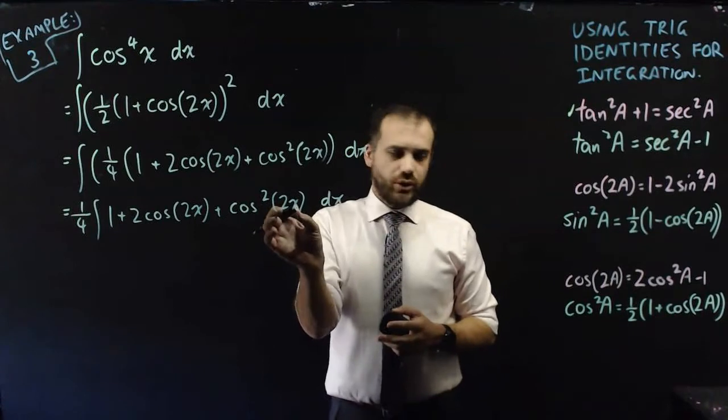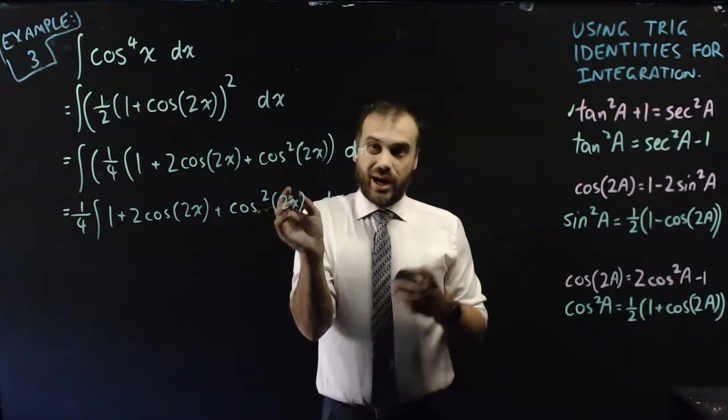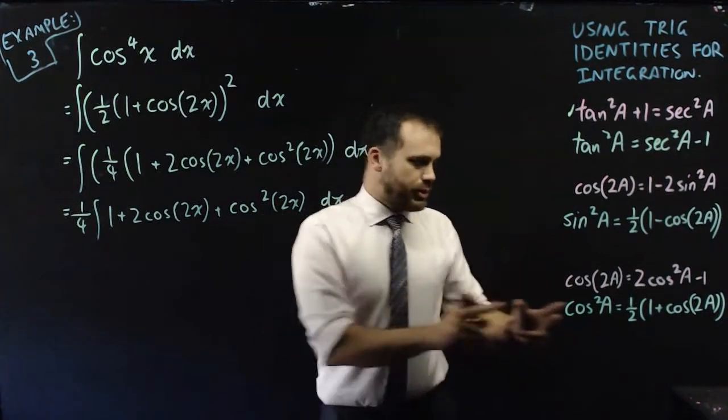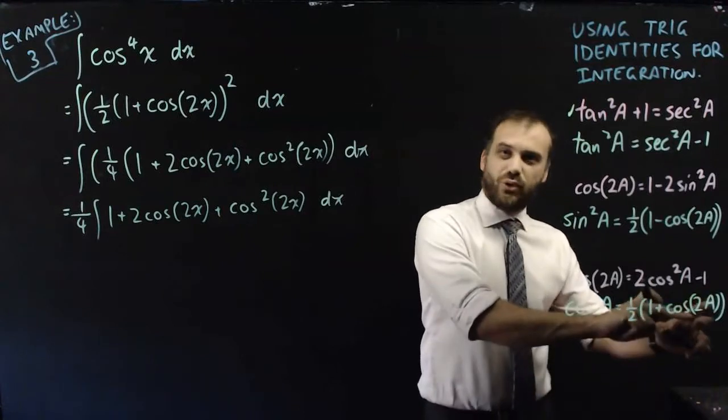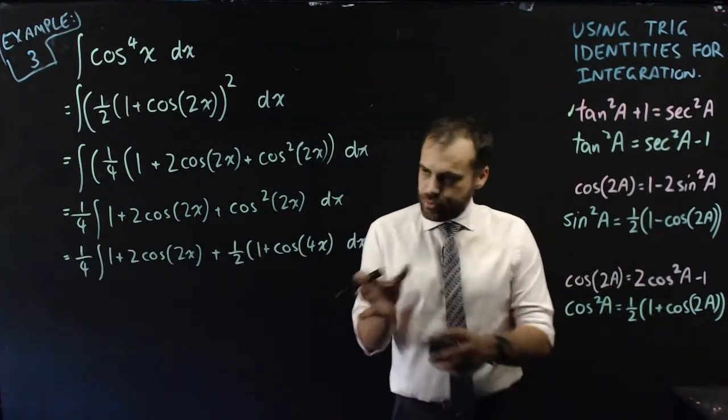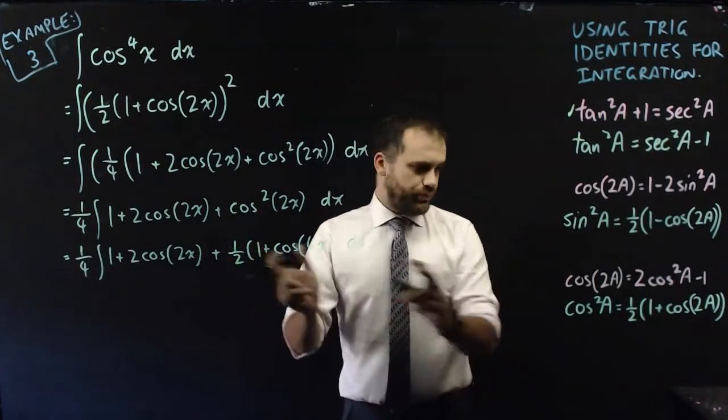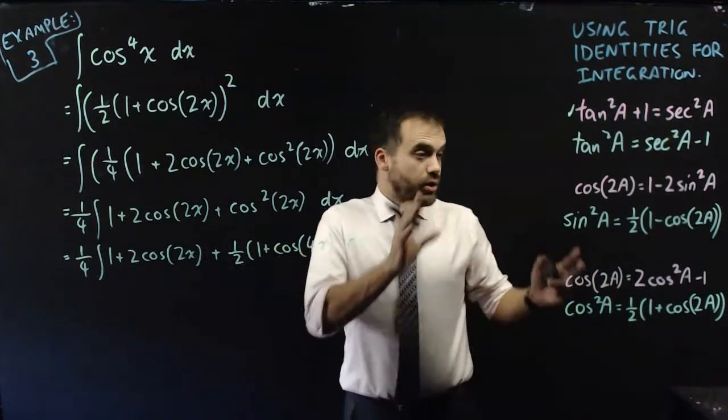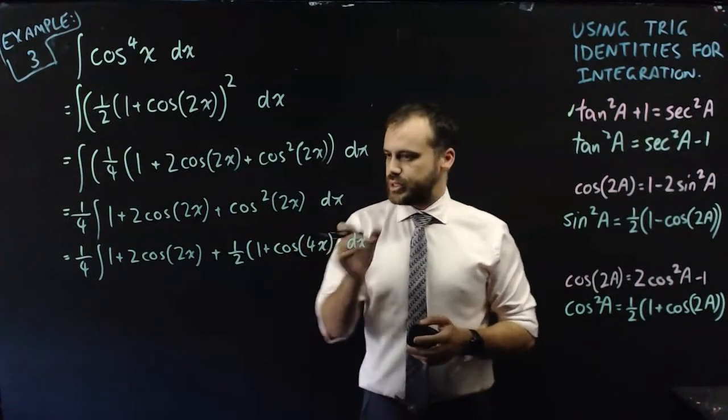Now you need to be careful because we've got not an A, but we've got a 2A or a 2x there, which means that you're going to get like a 4A or a 4x when you put in this identity. So that's a pretty good substitution right there. We've put in our half times one plus cos(4x) because we started with a 2x there.